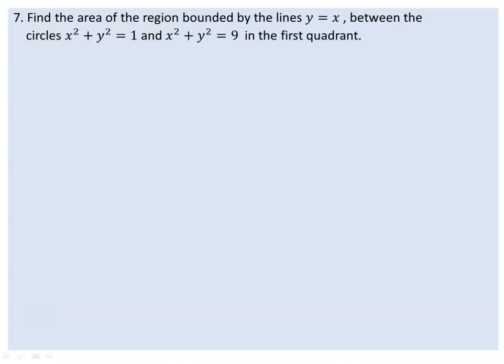I am asked to find the area of the region bounded by the line y equals x, between the circles x² + y² = 1 and x² + y² = 9, in the first quadrant.